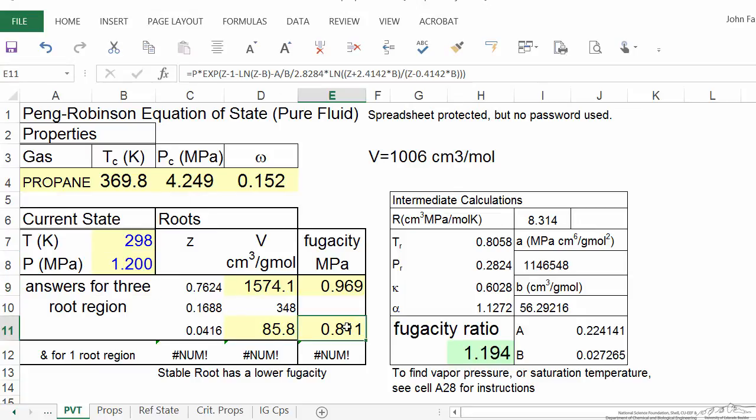Now notice the lower fugacity is for the liquid, with much too small a volume. The vapor has too large a volume. What does this mean? We went from liquid phase with too small a volume to vapor phase with too large a volume. This means at these conditions we must be in vapor-liquid equilibrium.